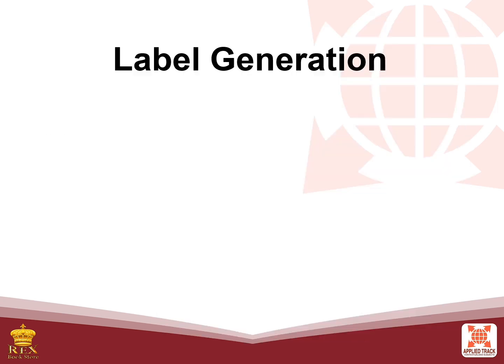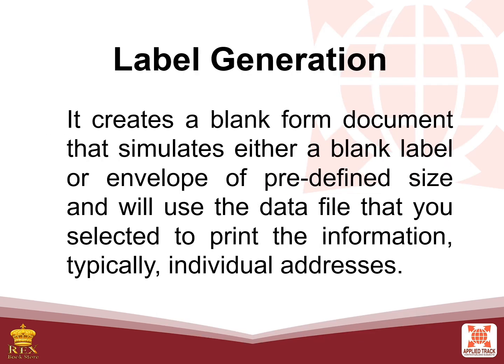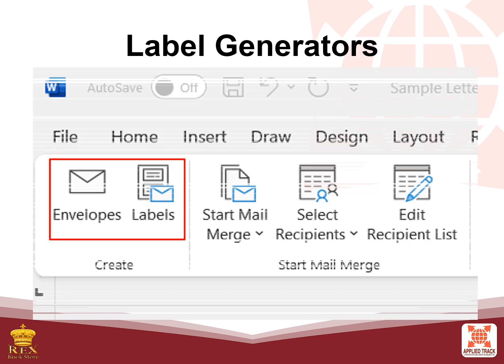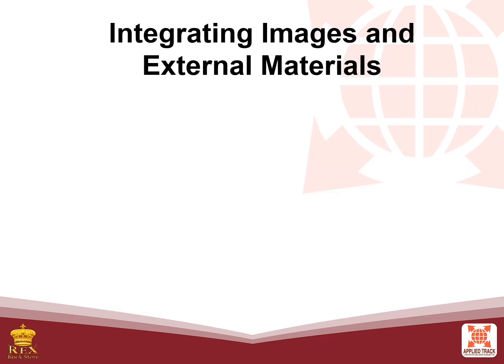Let's now proceed with label generation. Label generation creates a blank form document that simulates either a blank label or envelope of predefined size, and uses the data file you selected to print the information — typically individual addresses. In your Mailings tab, you can find Envelopes and Labels right before Start Mail Merge. After mail merging and label generating, let's proceed with integrating images and external materials.